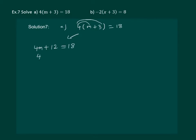Let us transpose 12. It will give us 18 minus 12. So we have 4m equal to 6, and dividing by 4 on both sides, we will get m equal to 6 by 4. Let us solve this further and we will get m equal to 3 by 2.